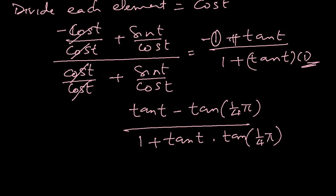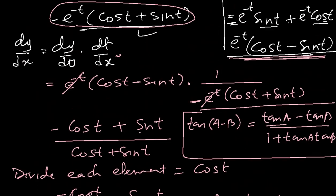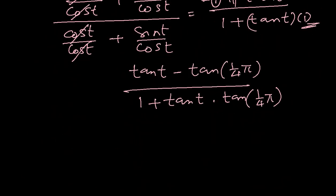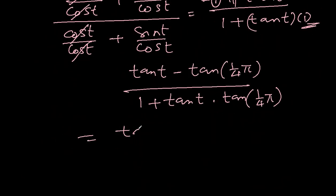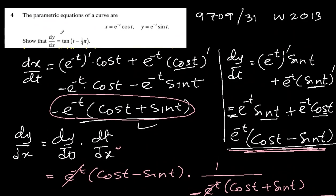Again, this 1 is replaced by tan(π/4). Why? Because I wanted to get this format: tan(a) - tan(b) over 1 + tan(a)tan(b). And this is what it is here. And according to the identity, it will be equal to tan(t - π/4). And this is what they wanted us to show. Look at the question—dy/dx is this. We got it.